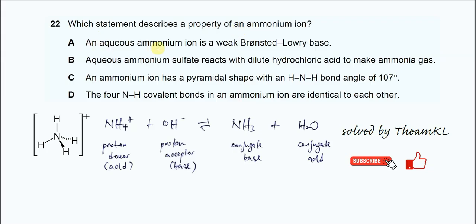Option A: An aqueous ammonium ion is a weak Bronsted-Lowry base. When we say that a species is a Bronsted-Lowry base, it means it should be the proton acceptor.